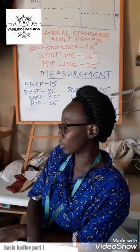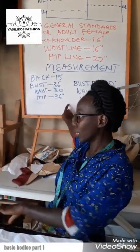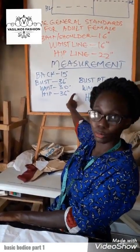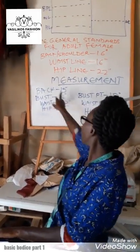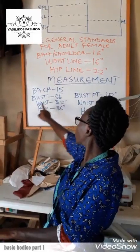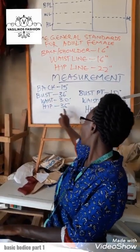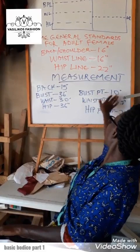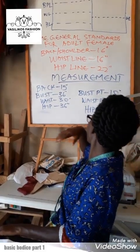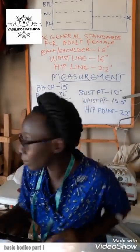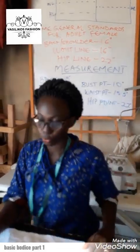For our draft this morning, we'll be using this particular measurement: back 15 inches, bust 36, waist 30, hip 36 inches, bust point 10 inches, waist point 15.5, and our hip point is 22 inches. So let's go.